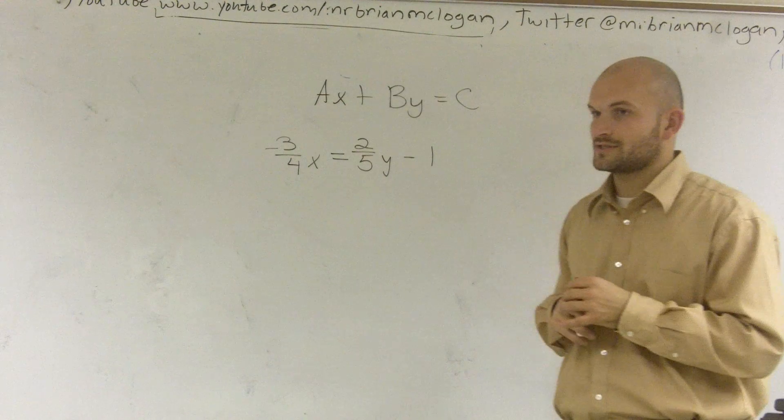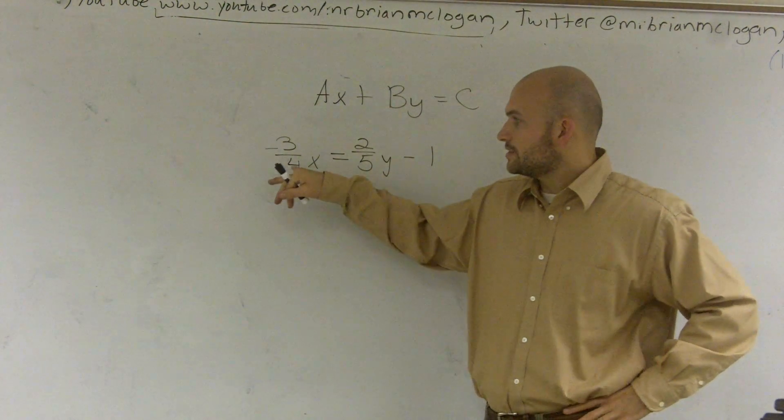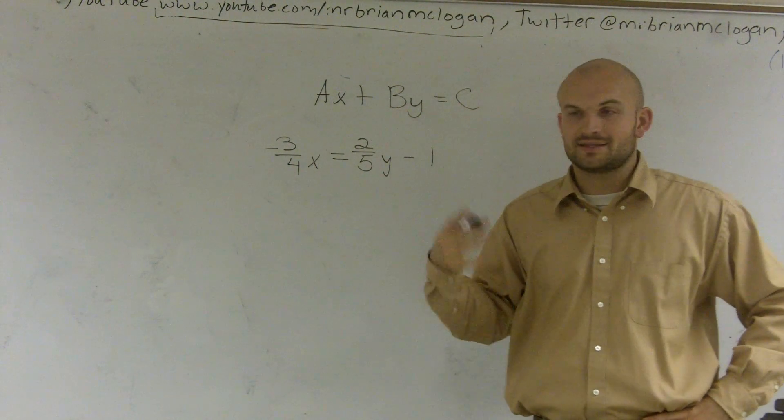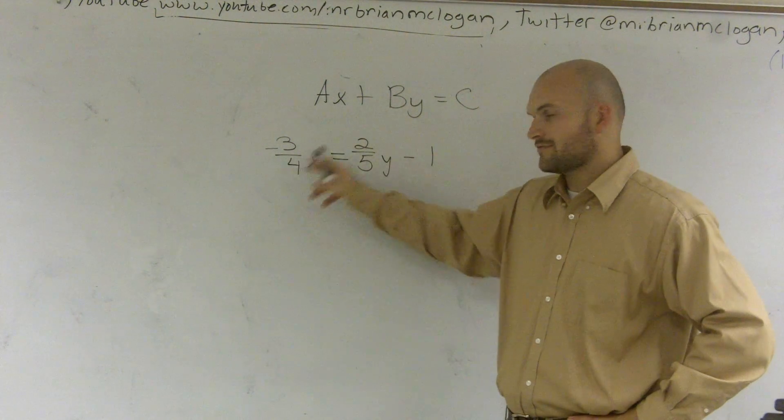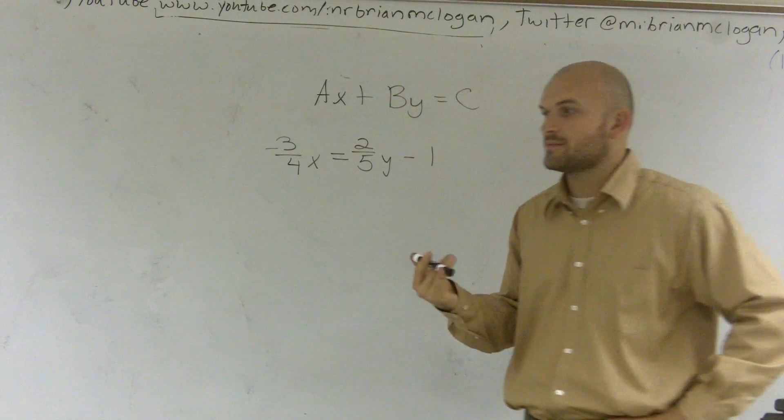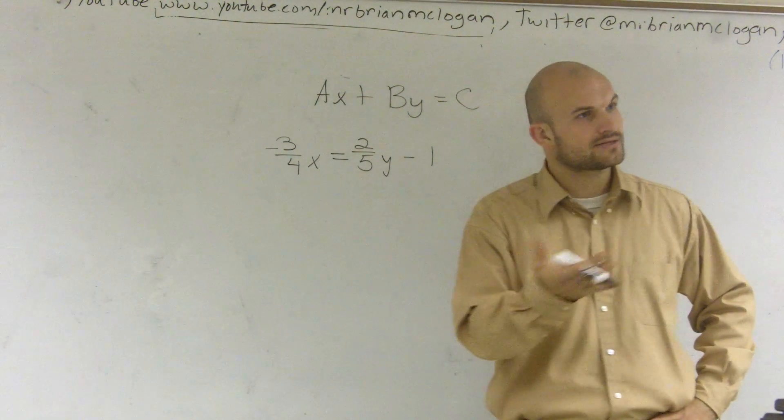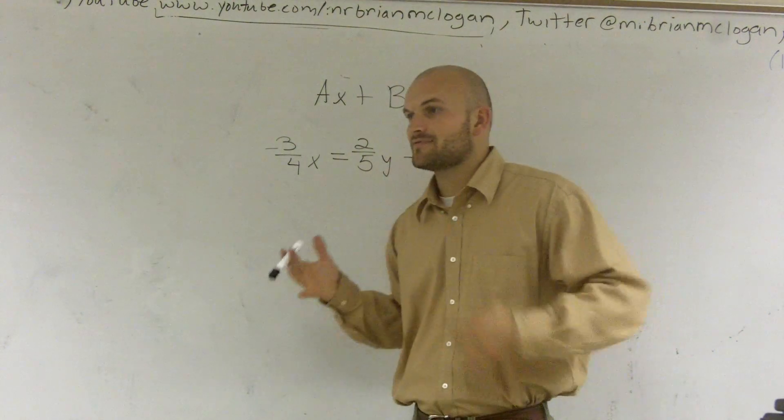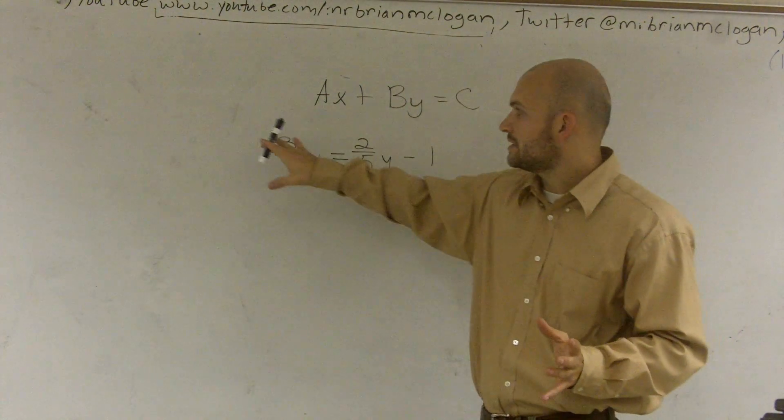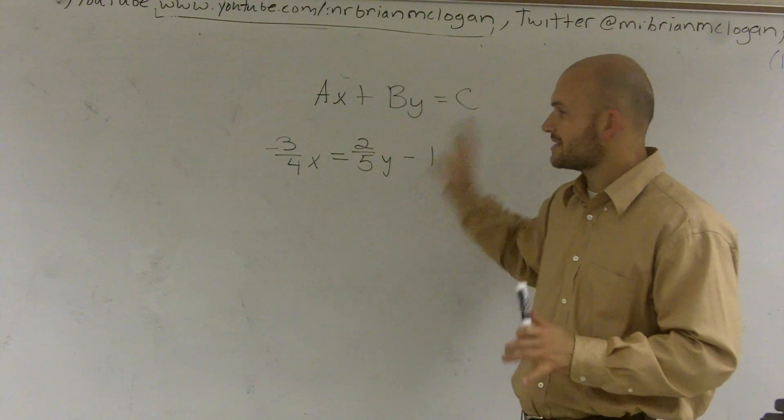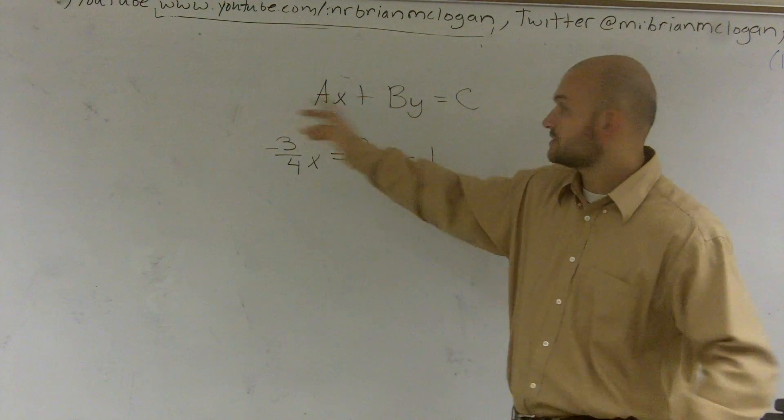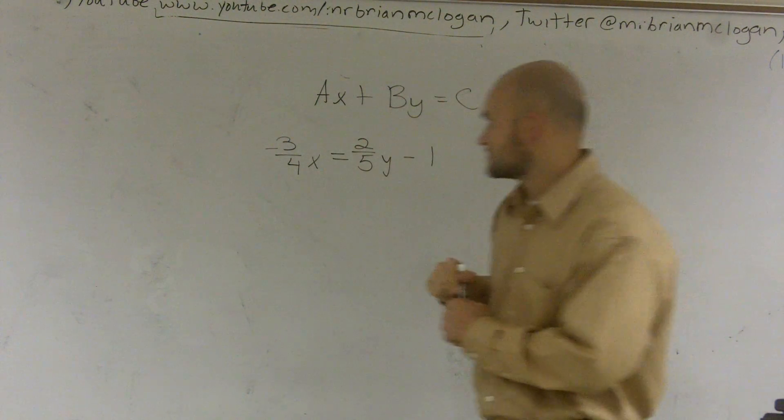So what we need to do is we need to get rid of these fractions. And when I have fractions that have different denominators, I need to find the least common denominator. So I look at 4 and 5, and I say, what is the smallest number that they both go into? And that is 20. So now that I have 20, what we do is I'm going to multiply each one of these terms. Actually, before I do that, let's get them over to the side. Let's get the x and the y to the same side.